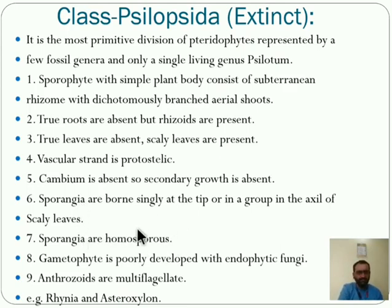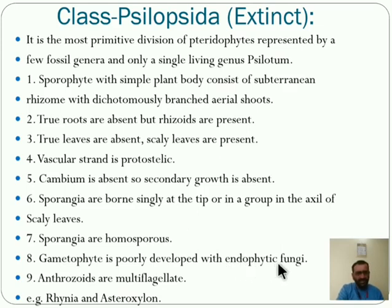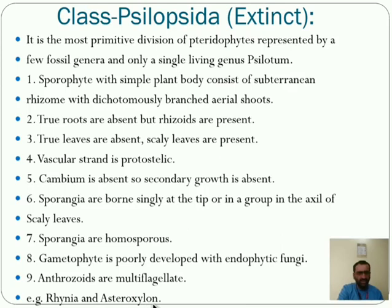The sporangia are present on a single plant. Gametophyte is poorly developed with endophytic fungi. The gametophyte is developed with fungi — that is the endophytic fungi. Antherozoids are multiflagellate. The examples of Psilopsida are Rhynia and Asteroxylon — these are the two examples of the Psilopsida class.